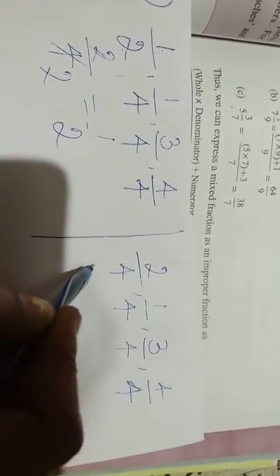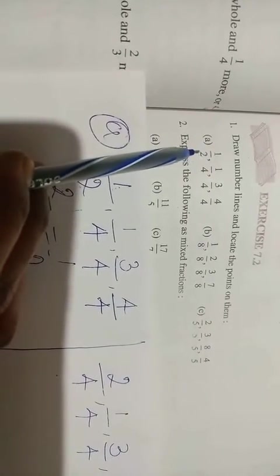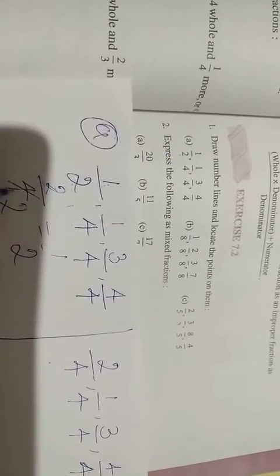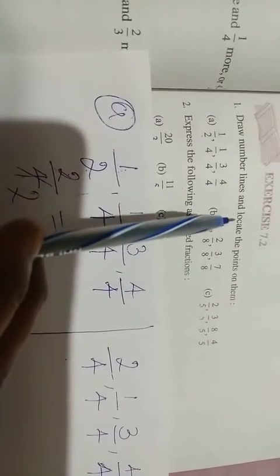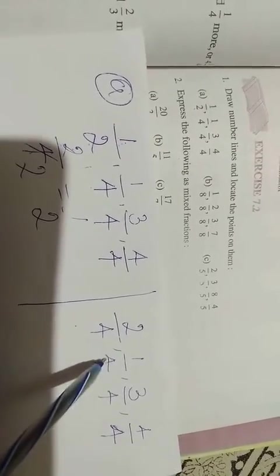Now you can easily circle the fractions. Because here 2 is there, you have to make this one 2 by 4. 2 by 4 means 1 by 2. Draw number line and locate the points on them - you have to easily locate these fractions on the number line.